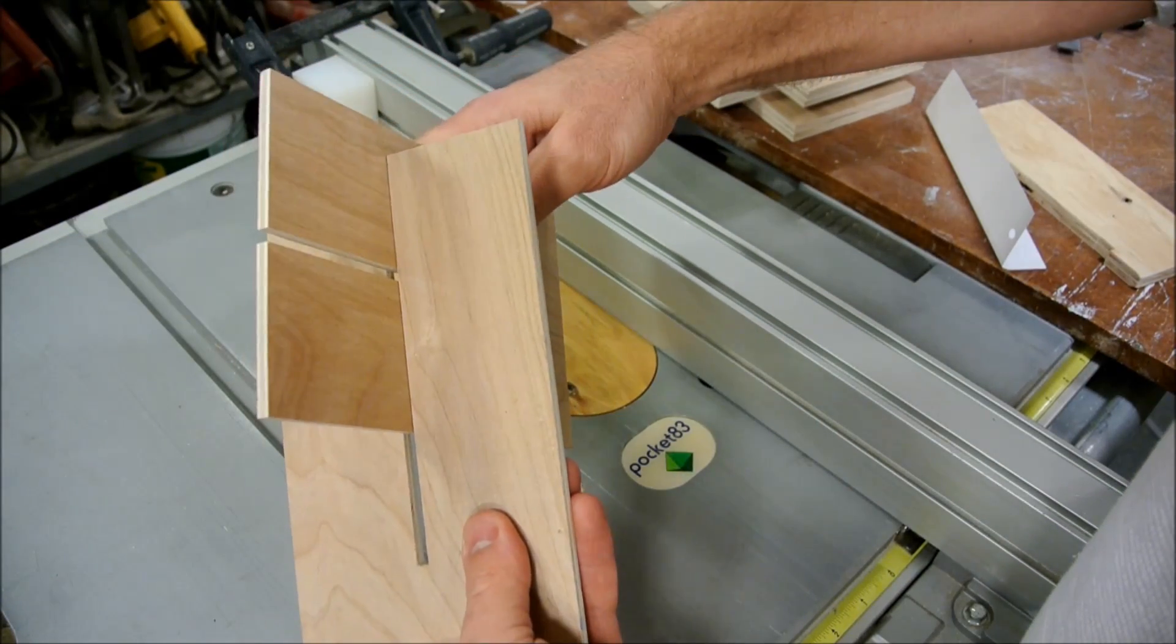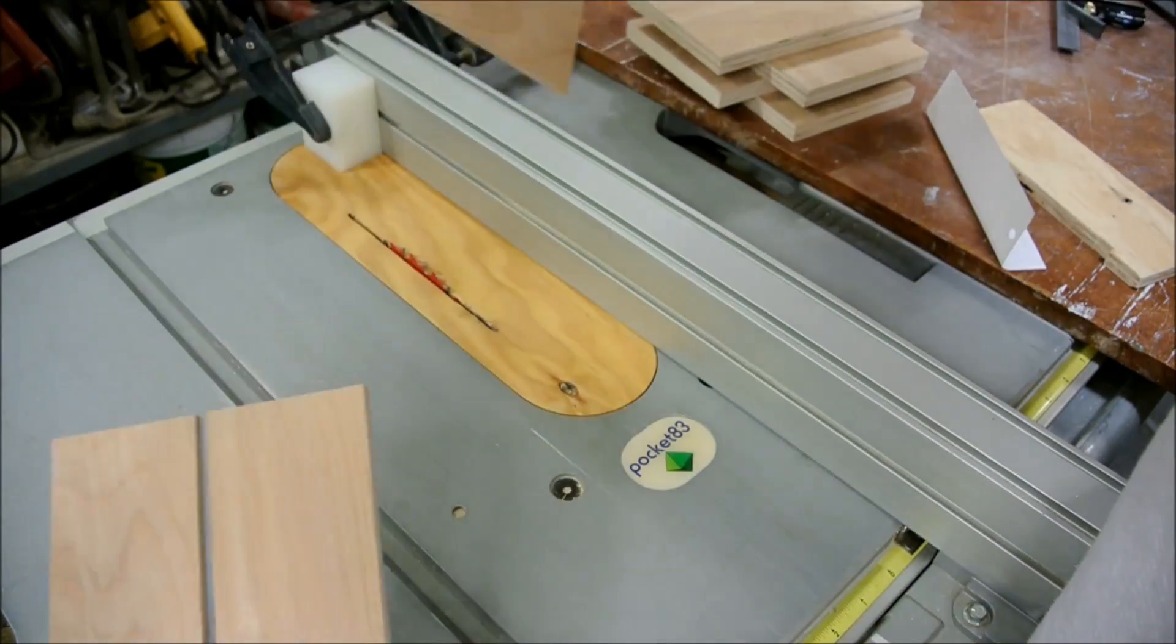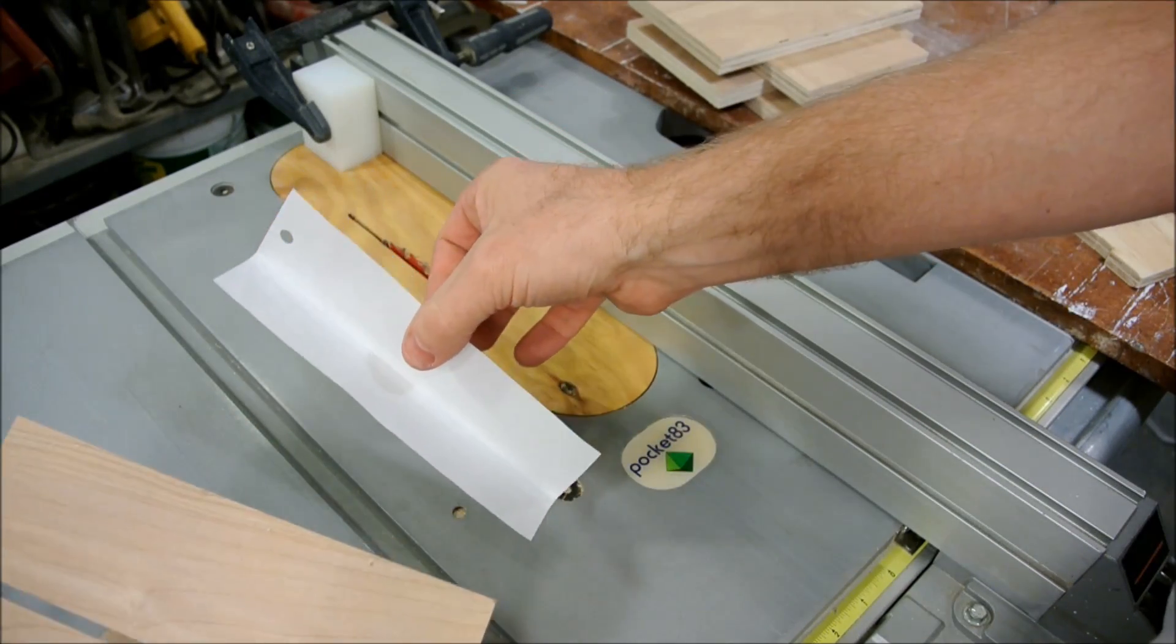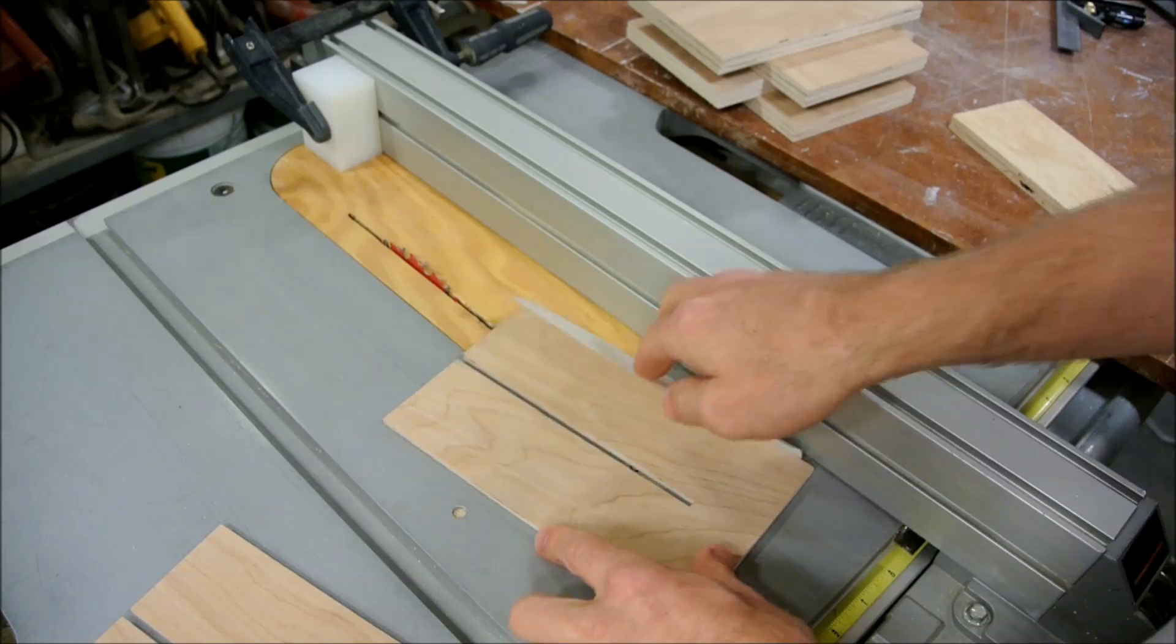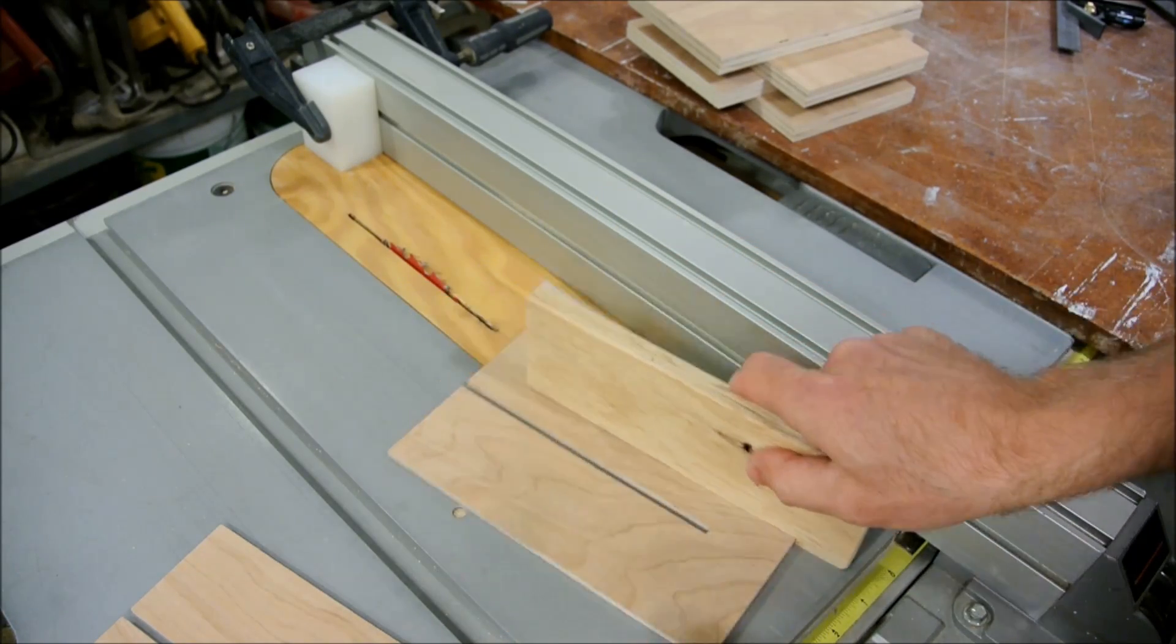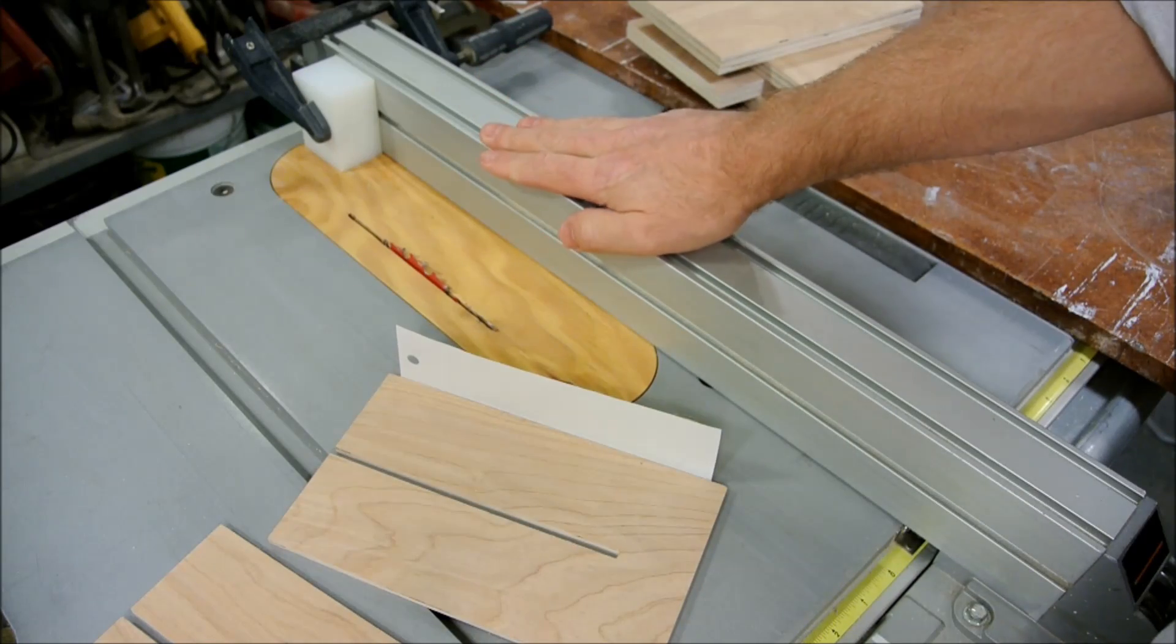Occasionally you'll have a fit that's just too snug, but fortunately there's an easy solution to this. Just use a piece of paper as a shim, and then re-cut your slots. This way you can avoid having to make any adjustment on the fence.